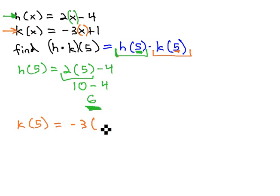We have -3x, which becomes -3 × 5 + 1. Order of operations has us multiply first, giving -15 + 1 = -14.